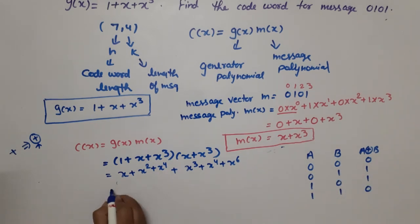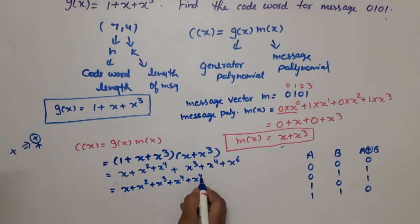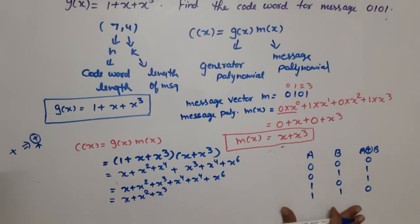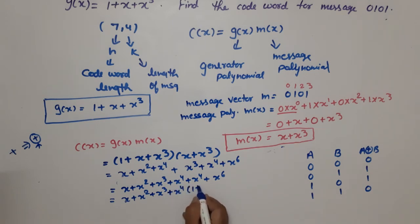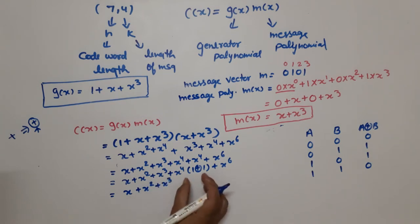Combining all terms: x + x² + x³ + x⁴ + x⁴ + x⁶. Since this is binary (XOR), the two x⁴ terms cancel to 0. So the final codeword polynomial is C(x) = x + x² + x³ + x⁶.